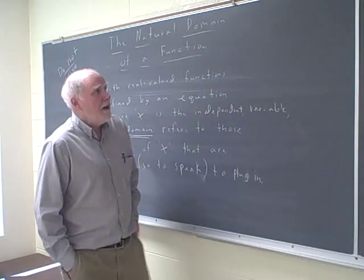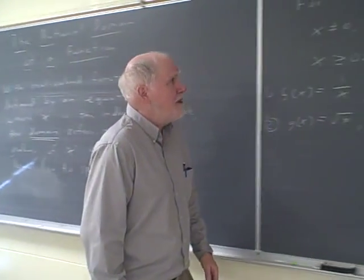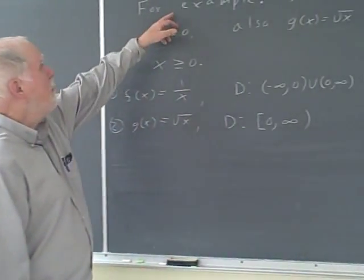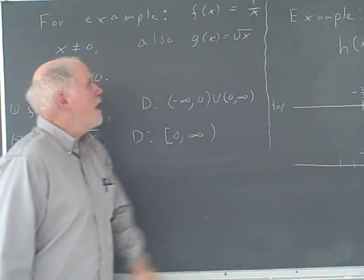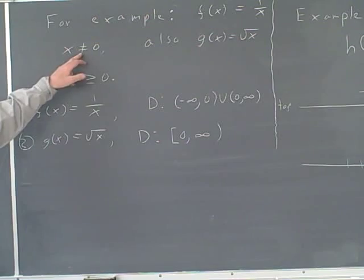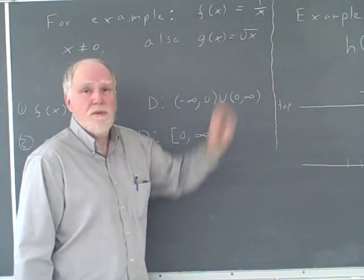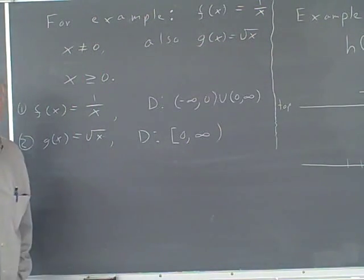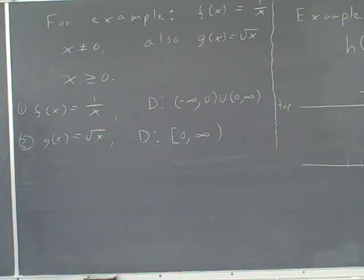We're going to take a look at a couple easy examples. For example, f(x) equals 1 over x. You can put a lot of values in there—you can put negative 50, 25, 9.72—but you can't put 0 in here for x. You can't replace x with 0, because if you do, you'll have division by 0, and the function will be undefined.